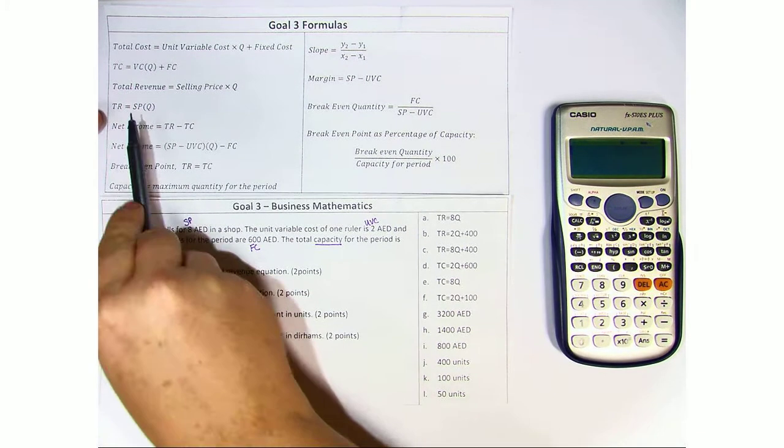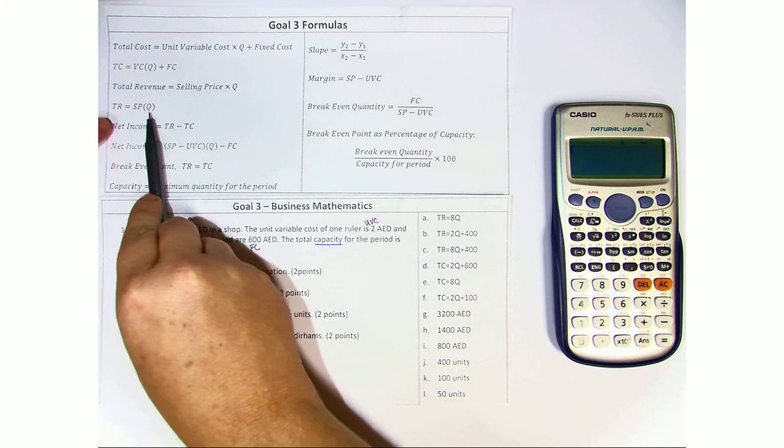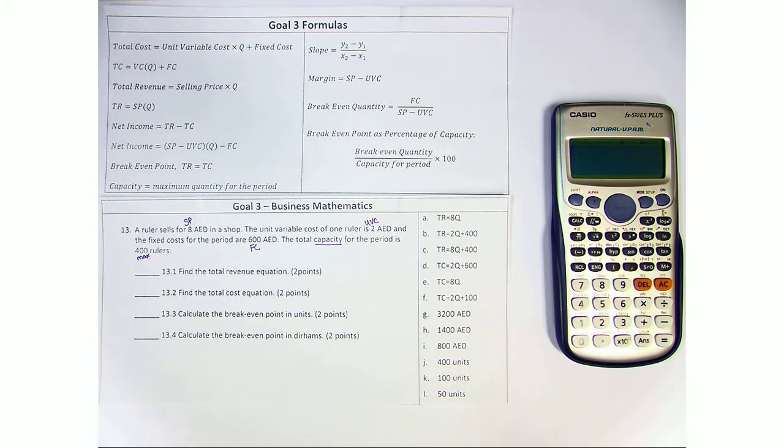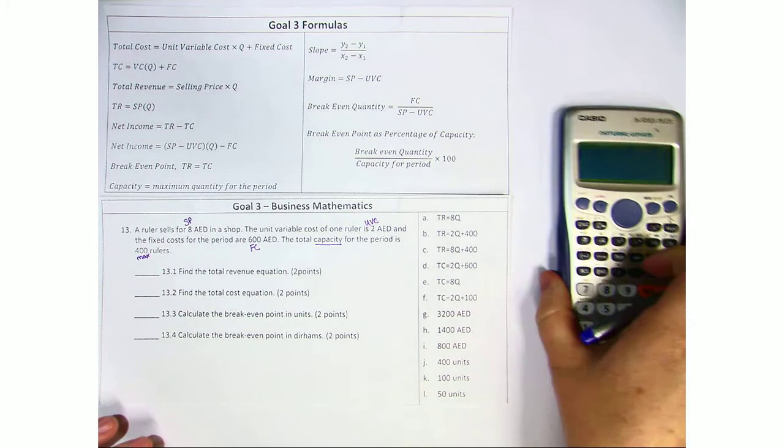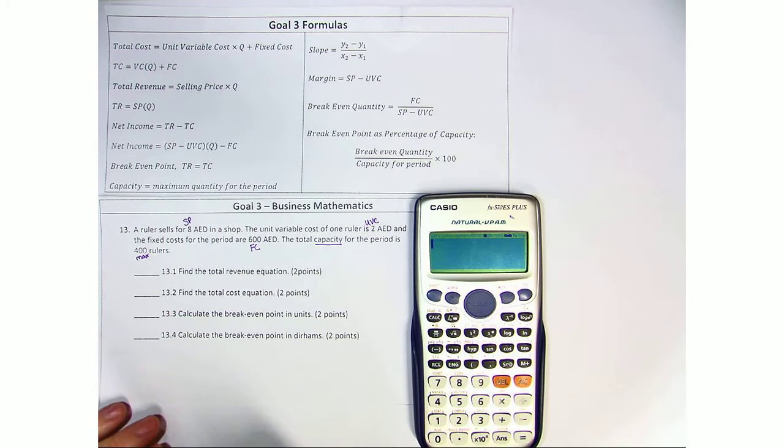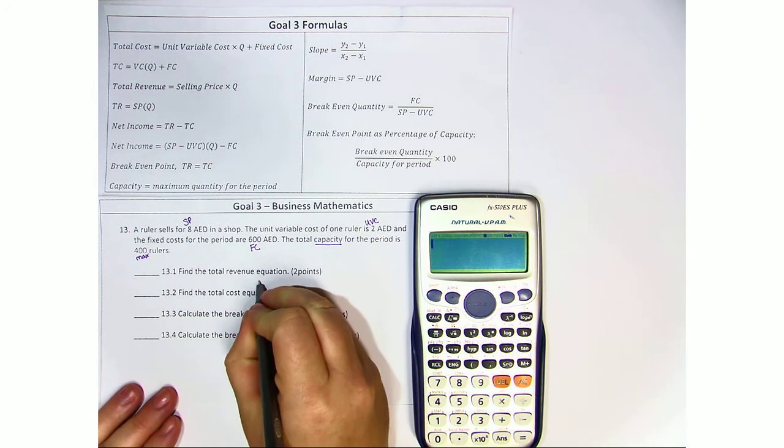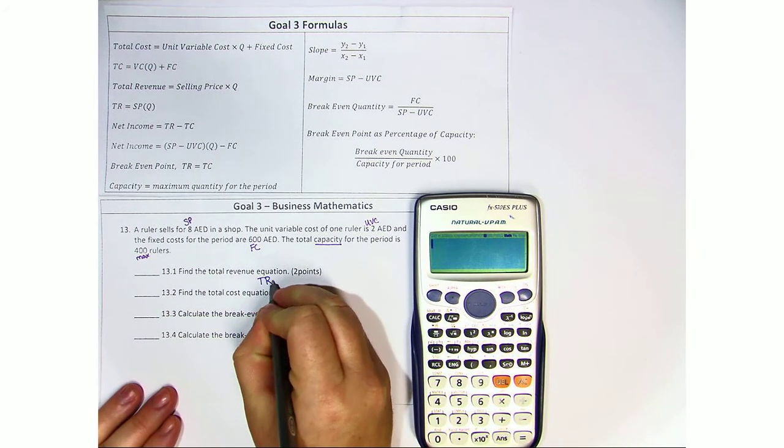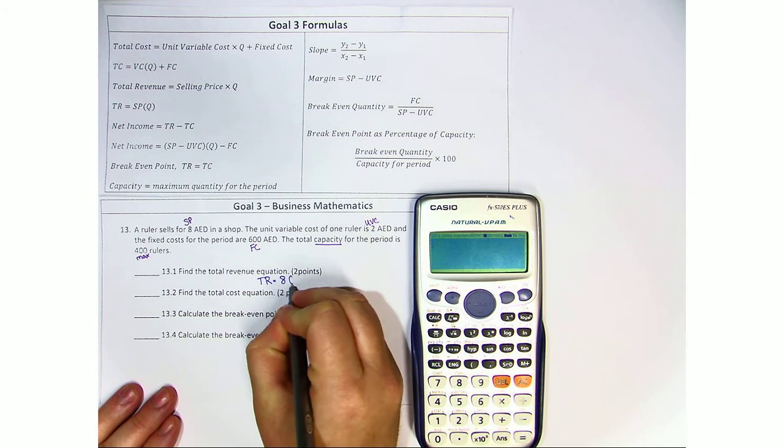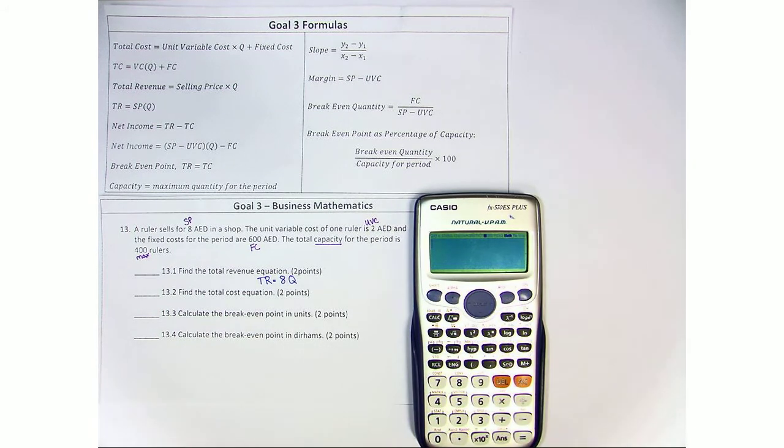Here in the formula sheet, we see that total revenue is selling price times quantity. We found the selling price is 8 dirhams, so we're going to go ahead and write that. TR equals 8, and we do not have a quantity, so we simply leave it as Q.